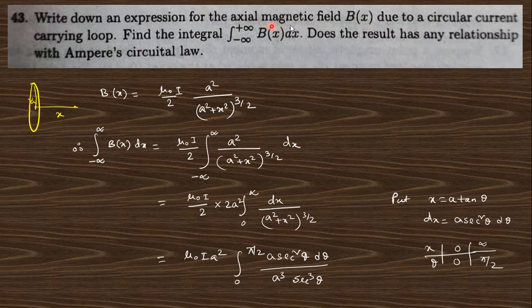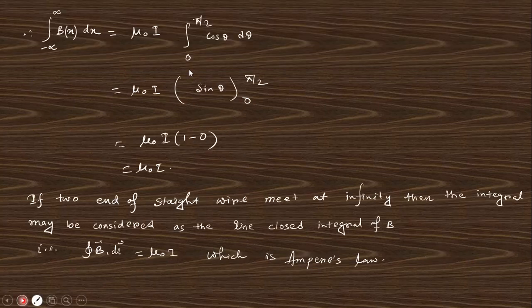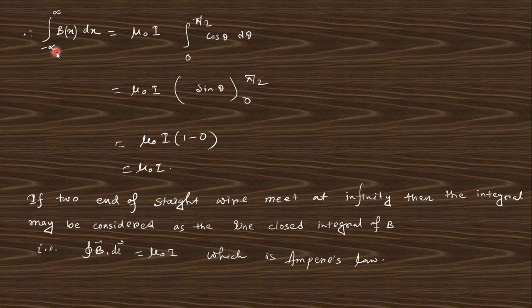Question 43: Write down an expression for the axial magnetic field Bx of a circular current loop. The magnetic field at distance x is obtained by integrating; substitute x = η·tan θ and carry out the integration to get (μ₀·i)/something. We can see this is consistent with Ampere's circuital law — if the loop is connected at infinity like a straight wire, the total magnetic field within the loop is μ₀·i, confirming Ampere's law.